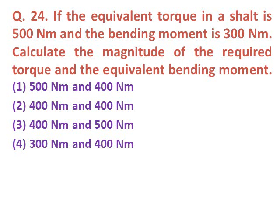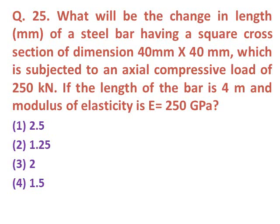Question twenty-three: If the equivalent torque in a shaft is 500 N·m and the bending moment is 300 N·m, calculate the magnitude of the required torque and equivalent bending moment. Using the relevant formula, the answer is 400 N·m torque and 400 N·m bending moment.